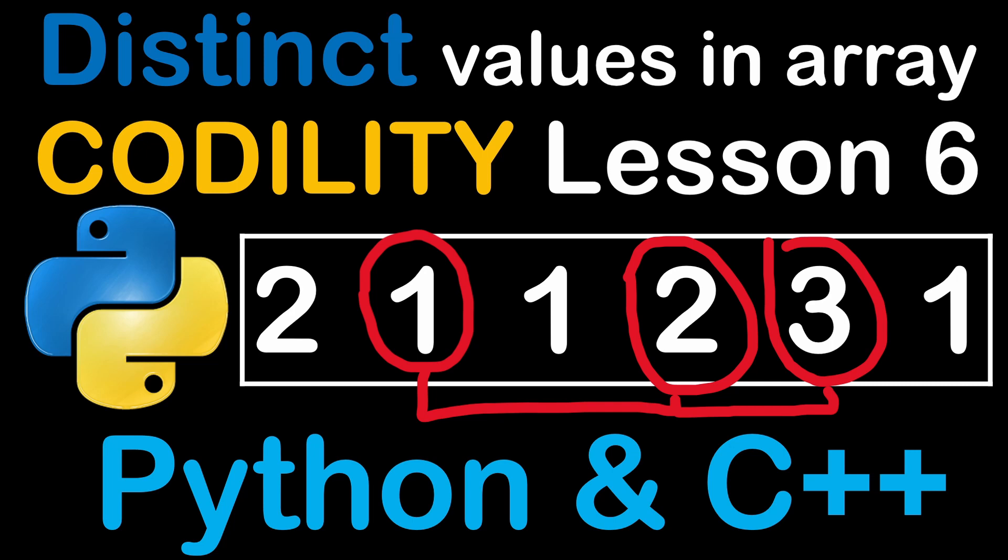In brief, in this example we are given an array and we have to count the total number of distinct values, meaning we have to discard the values that are repeated more than once. To make things clearer, we're going to explain the provided example.